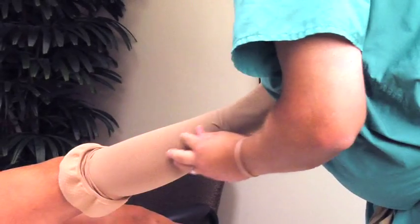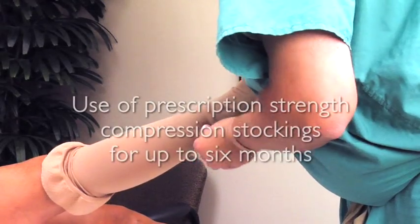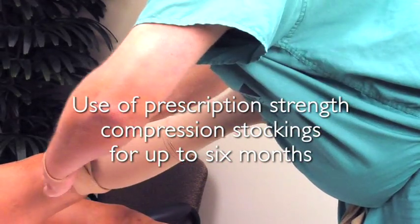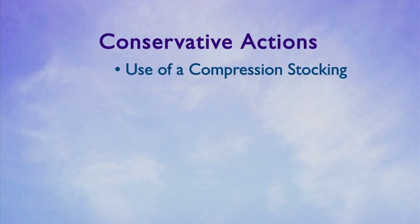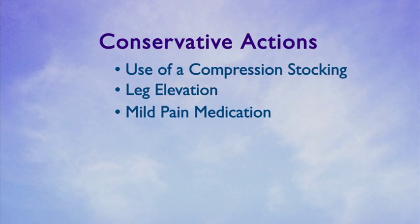Often insurance companies require the use of conservative measures before they will authorize treatment. Conservative measures may include the use of prescription strength compression stockings for up to six months, as well as leg elevation and the use of mild pain medication. Once these requirements have been met, we will request insurance authorization for the treatment plan.